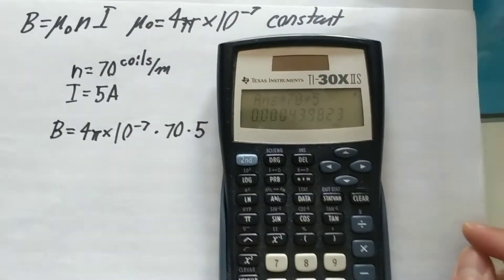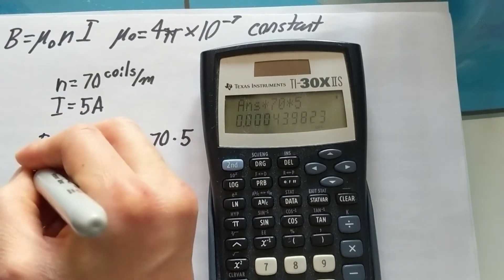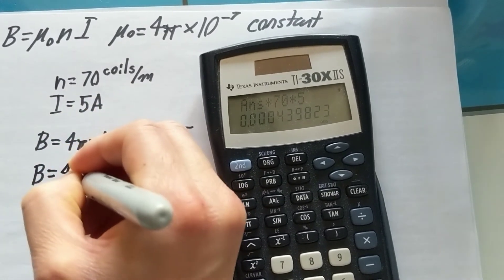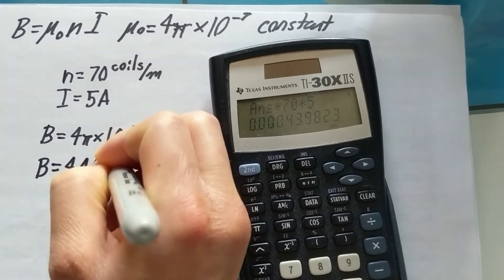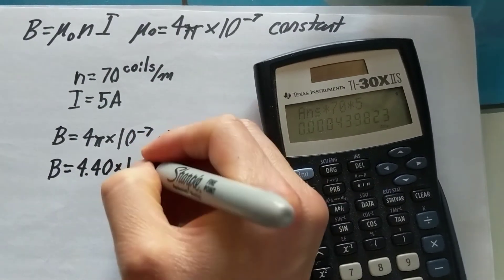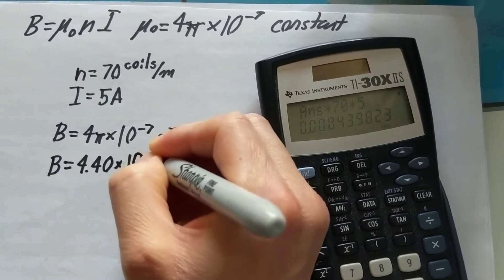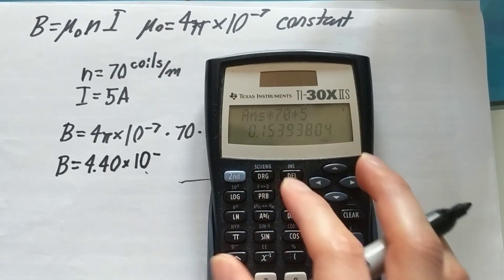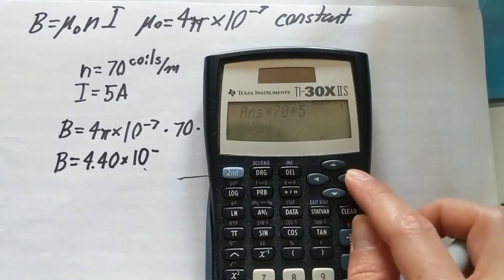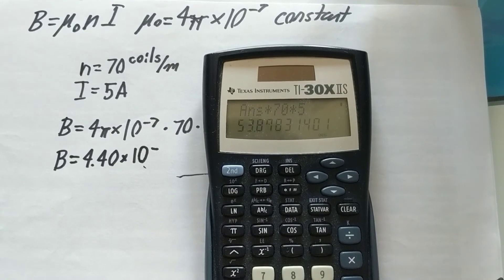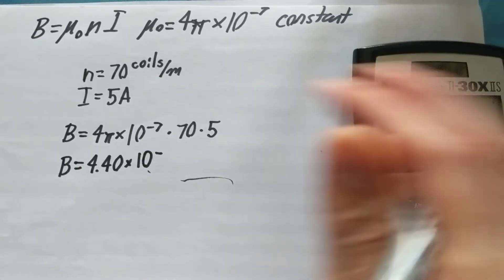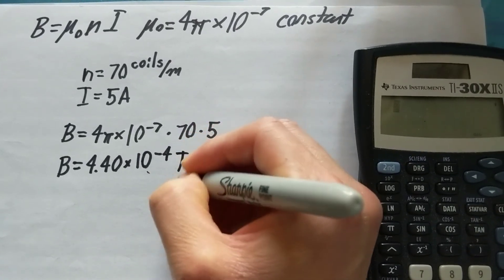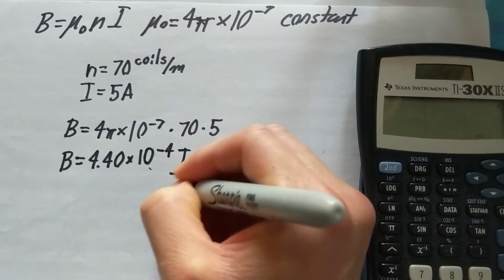In scientific notation, that's 4.4 times 10 to the negative... let's see... I believe that was negative 4 teslas, which is your unit, so this is a tesla.